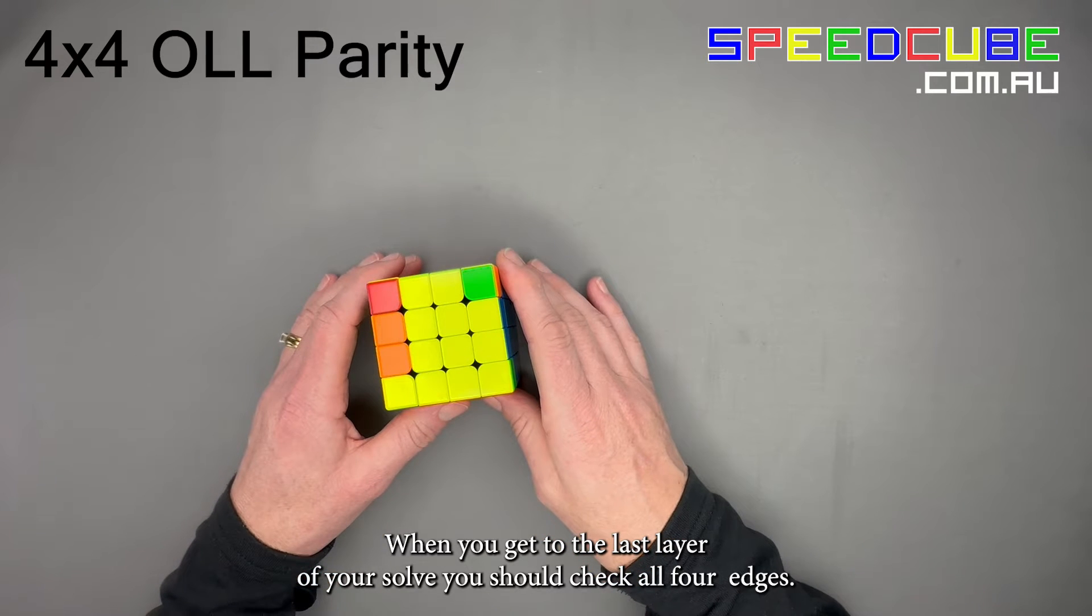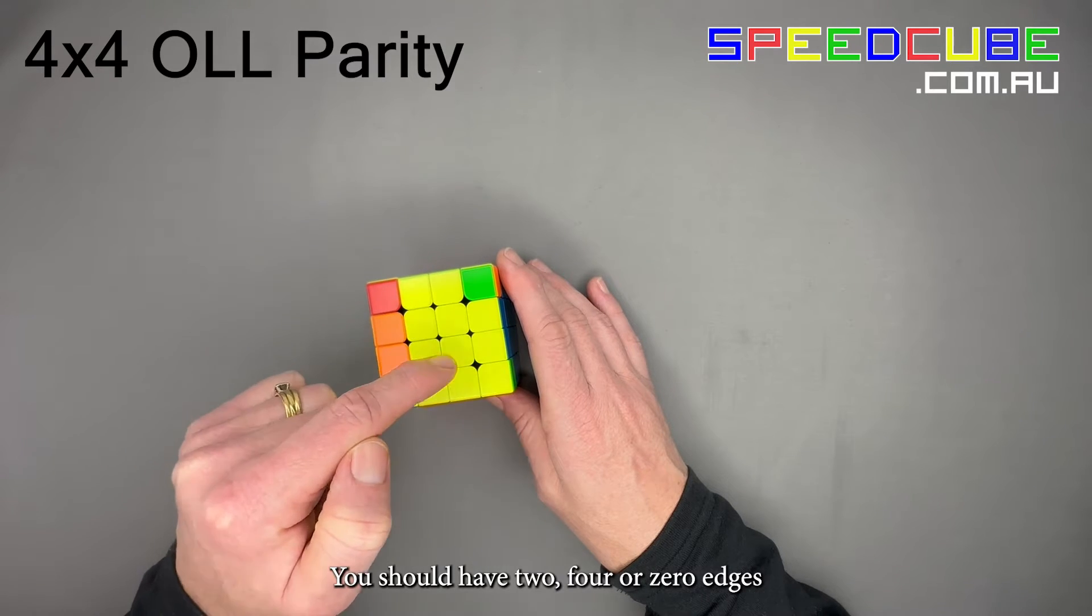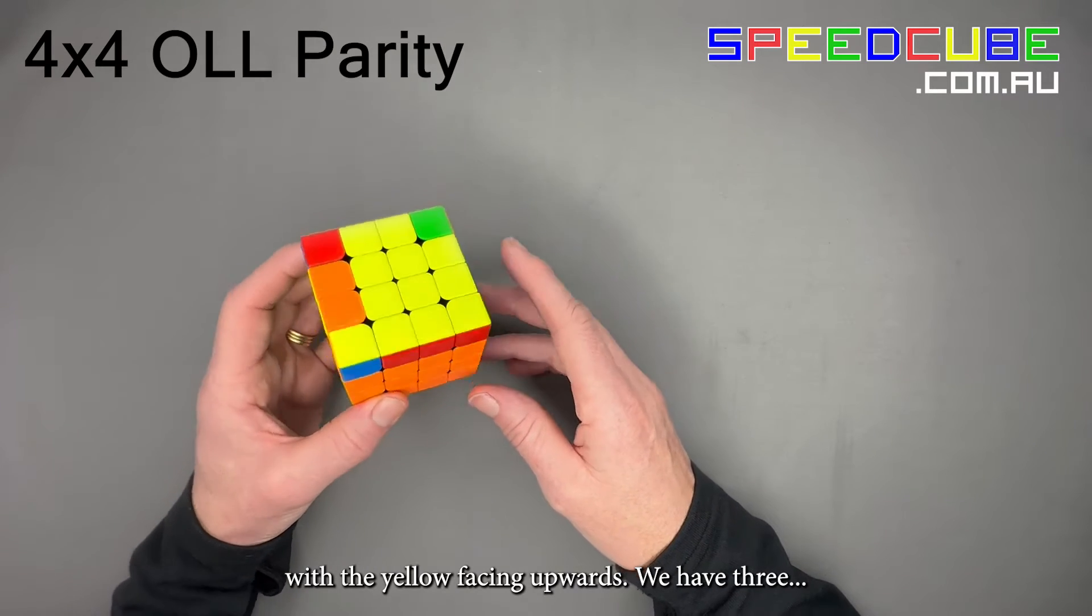When you get to the last layer of your solve, you should check all four edges. You should have two, four, or zero edges with the yellow facing upwards. We have three.